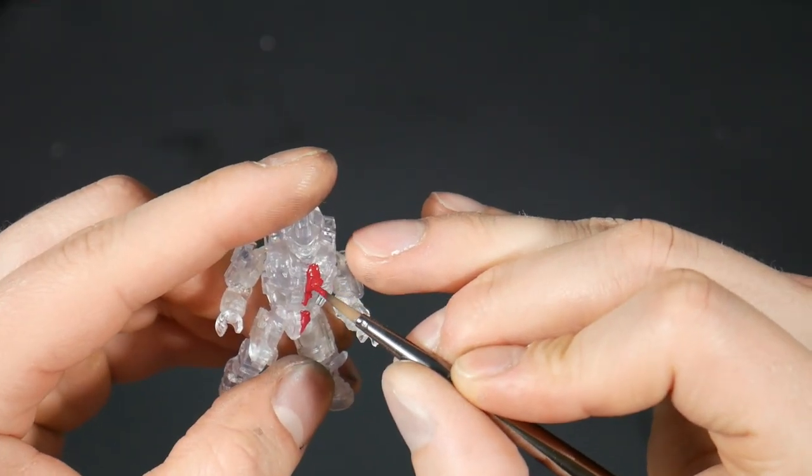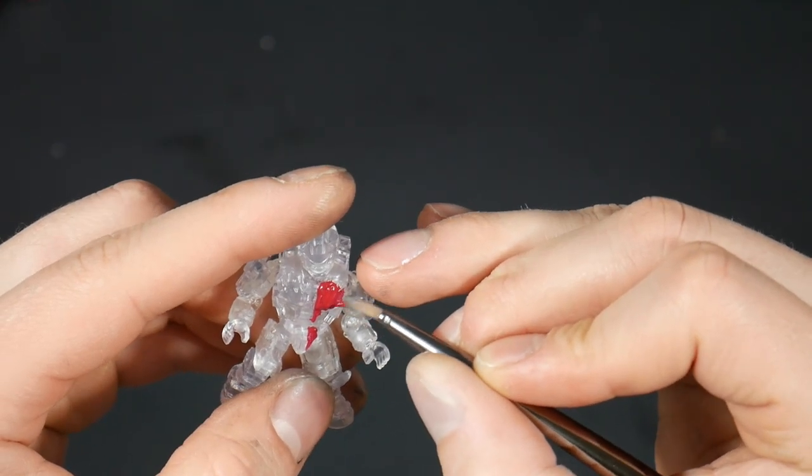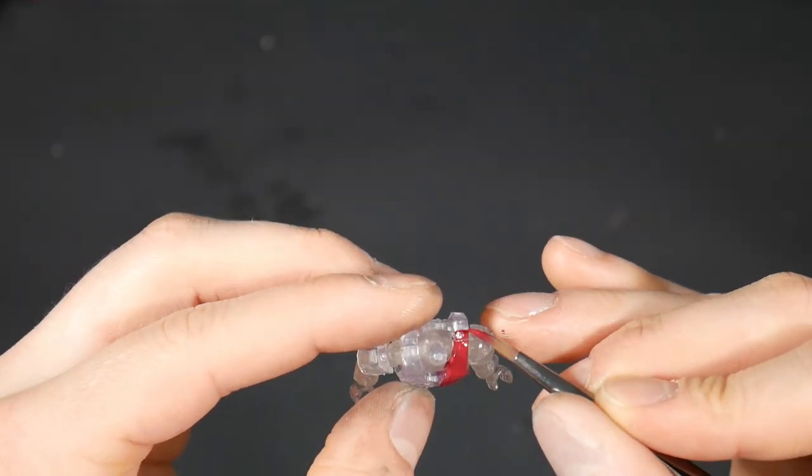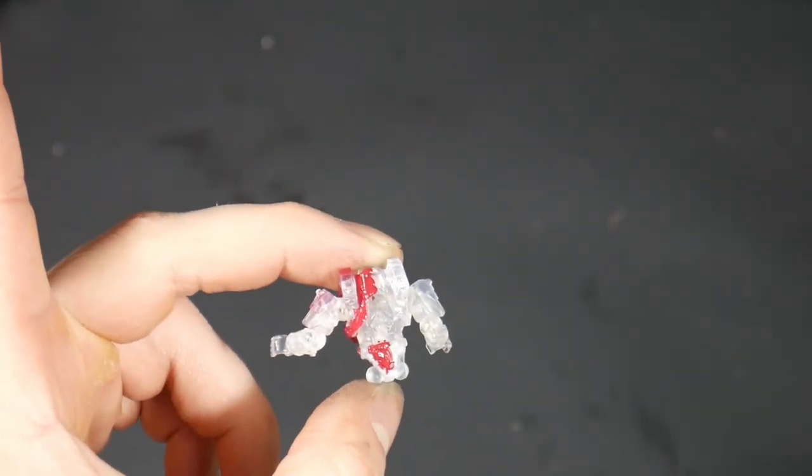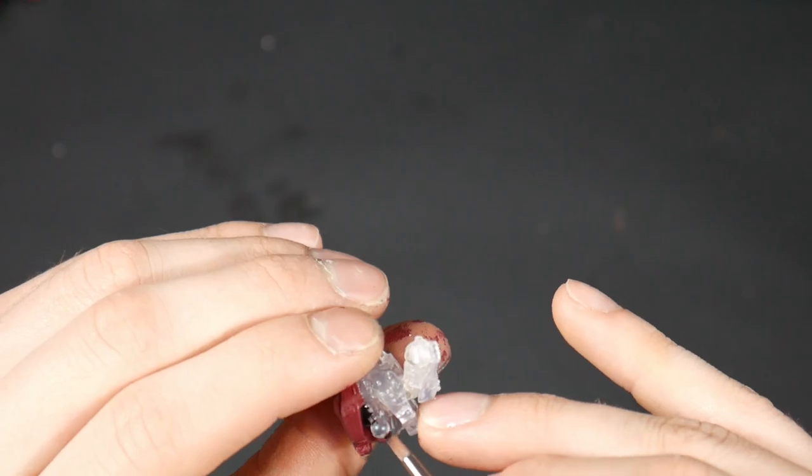For the AC figure we had to use red. I wanted him to be half AC half non AC and then on his right arm with the energy sword I wanted it to be glowing and then kind of reflecting on to the AC part.